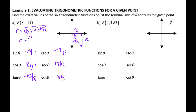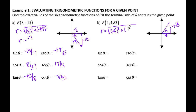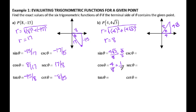For letter b, (4, 4√3) is in the first quadrant, so I'm moving over 4 units and then up 4√3 units, which gives you that triangle. To figure out r, using the Pythagorean theorem — 4 squared plus (4√3) squared — and taking the square root. Be careful when plugging this into the calculator, make sure you put 4√3 in parentheses. Your r ends up being 8. So sine is y over r: 4√3 over 8, which reduces to √3 over 2. Cosine is x over r: 4 over 8, which is 1/2. Tangent is y over x: 4√3 over 4, which reduces to √3.